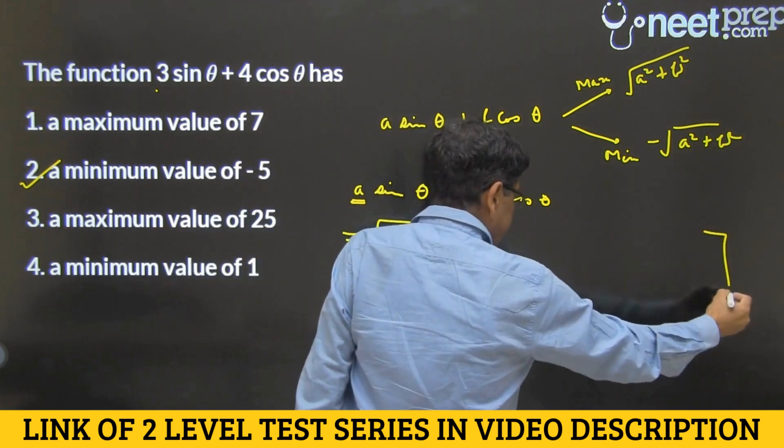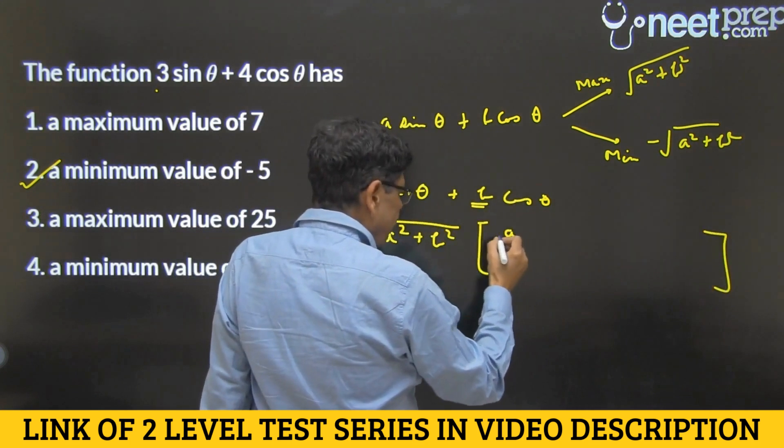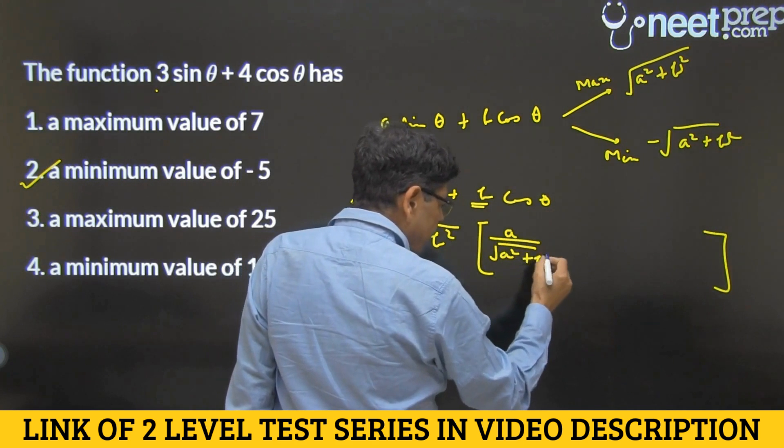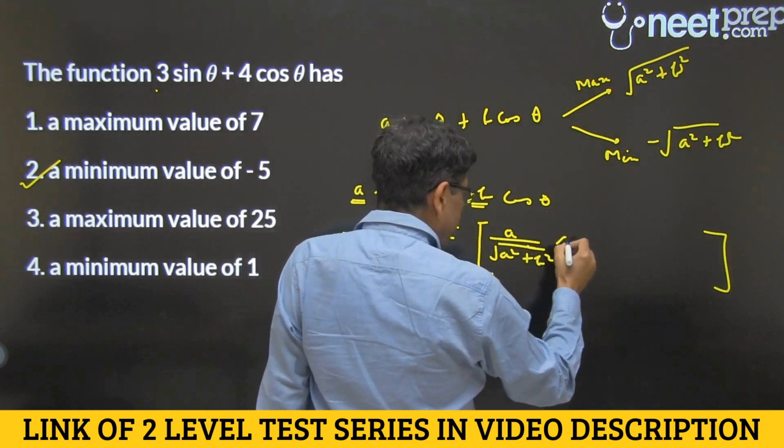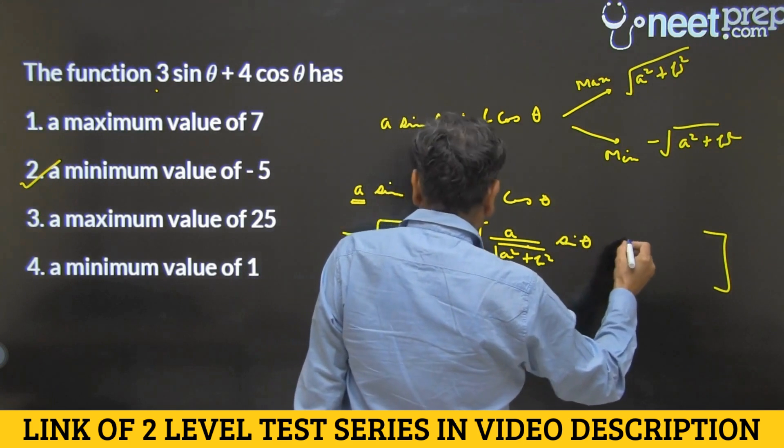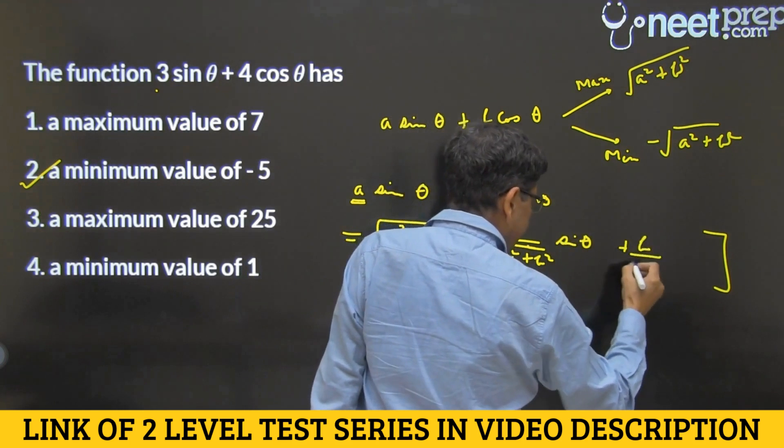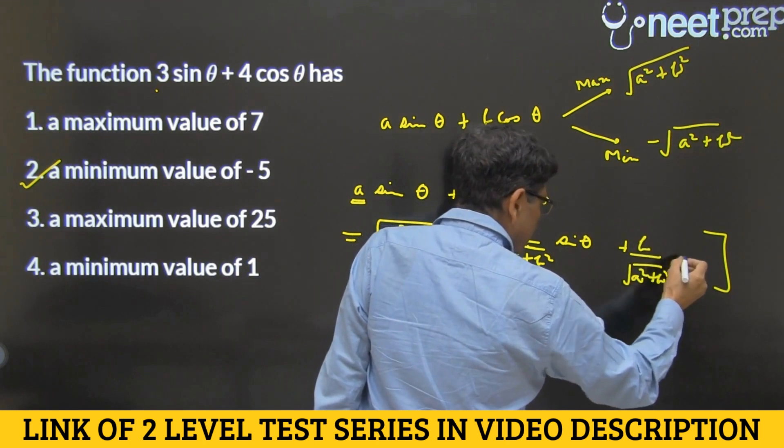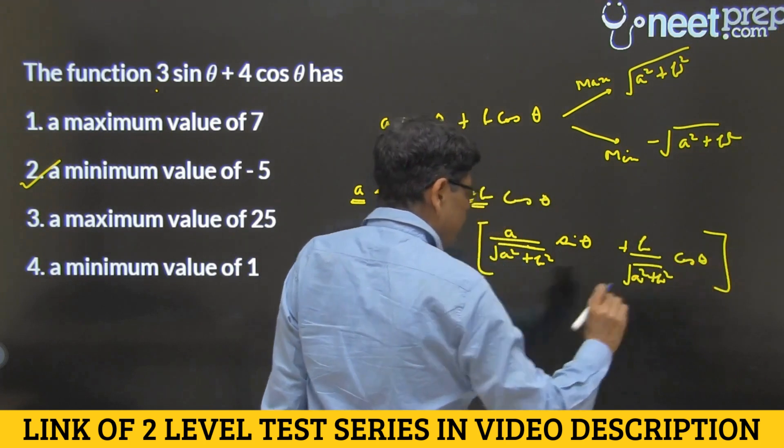So I get A/√(A² + B²) multiplied by sin(θ) plus B/√(A² + B²) multiplied by cos(θ). So far so good.